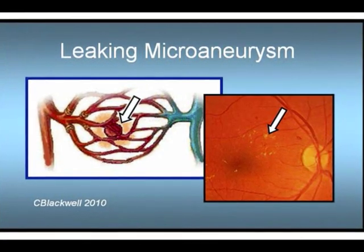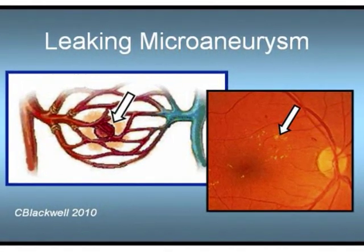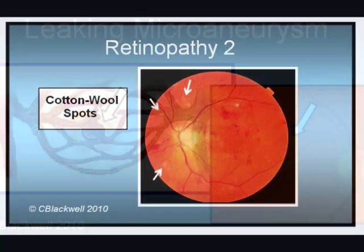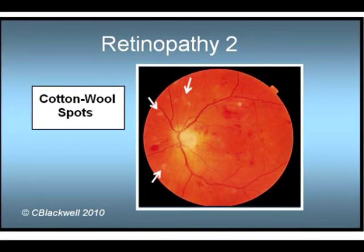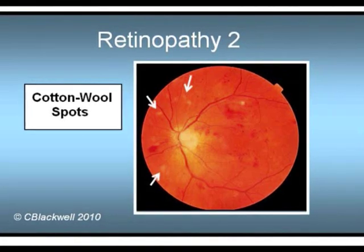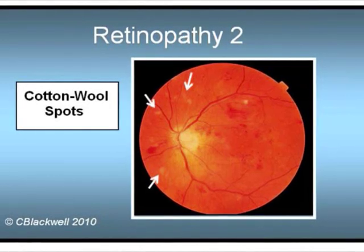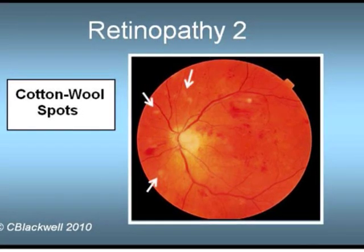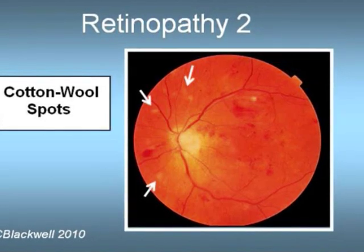Here is one more slide to show the connection between what you know is going on and what you see. The arrows are pointing to a leaking microaneurysm with surrounding edema or exudate. As more damage happens to the capillaries of the retina, they eventually shut down, meaning part of the retina is deprived of its blood supply and nerve cells start to die. What you see when that happens is a patch of retina that looks pale and swollen, called a cotton wool spot. There are also more hemorrhages in this picture. This is moderate retinopathy — a step worse than the last photo.